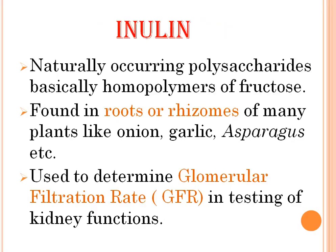Next one is inulin. Inulin is a naturally occurring polysaccharide, basically a homopolymer of fructose. It is found in the roots or rhizomes of many plants like onion, garlic, asparagus, etc. It is used to determine glomerular filtration rate, or GFR, in testing of kidney functions. GFR is 125 ml per minute, or 180 liters per day.